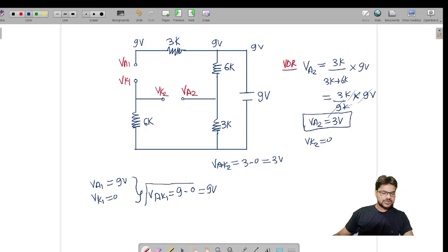From this I get VAK1, that is 9 minus 0, that is 9V. So voltage across diode D1 I got 9V and voltage across diode D2 I got 3V. Now one key point here is the diode which is having more voltage will get turned on first rather than the diode having less voltage. Here diode D1 is having 9V but diode D2 is having 3V, so diode D1 will get turned on first and D2 will remain off.